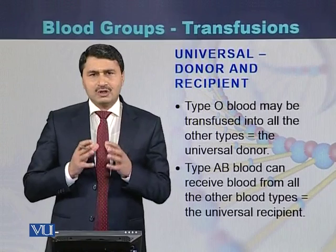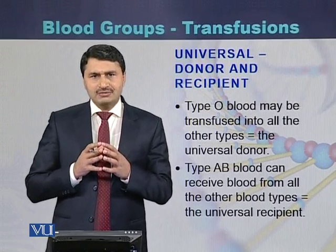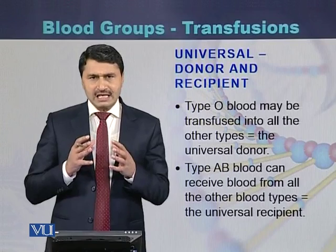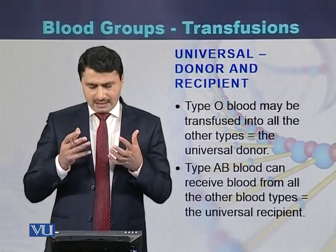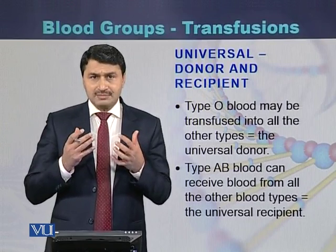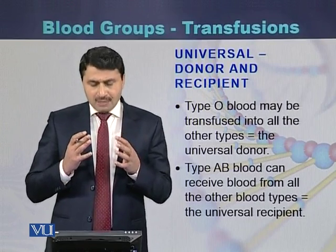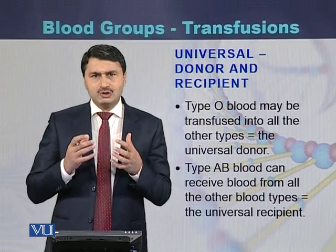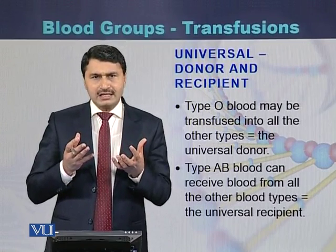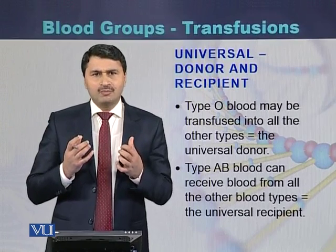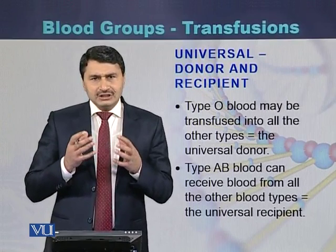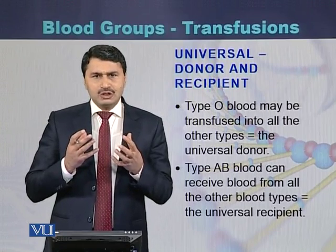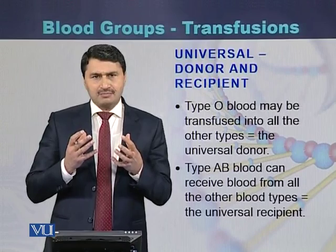Based on the types of alleles and the antigens present on the surface of red blood cells, there are two important categories. One type is called the universal donor and the second type is called the universal recipient. Blood group O is considered the universal donor and can be transfused to any person. Blood group AB is called the universal recipient.